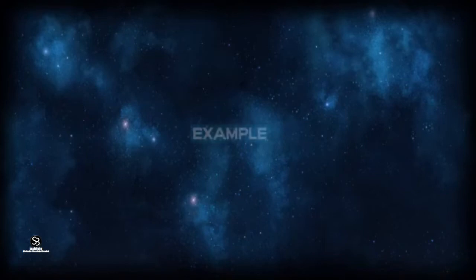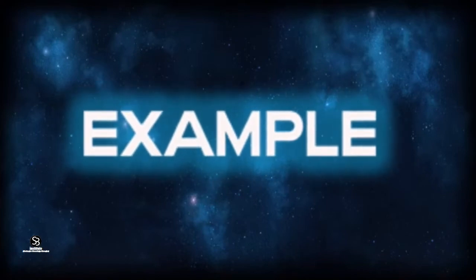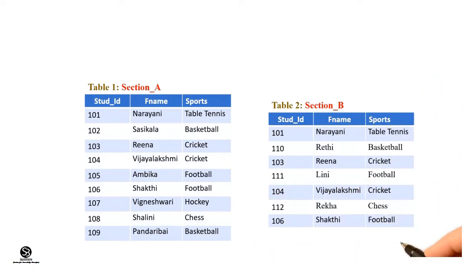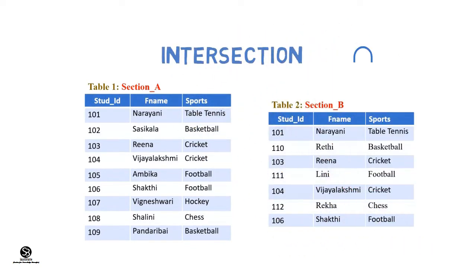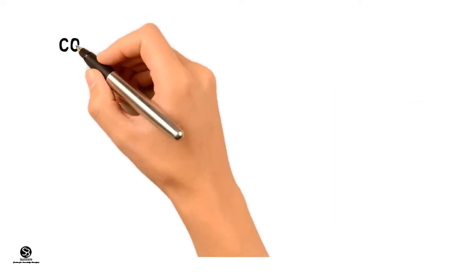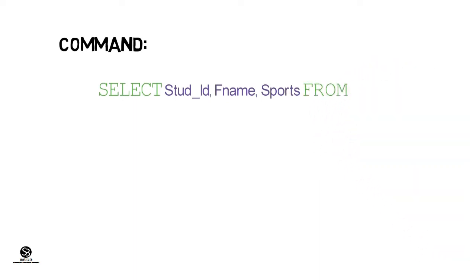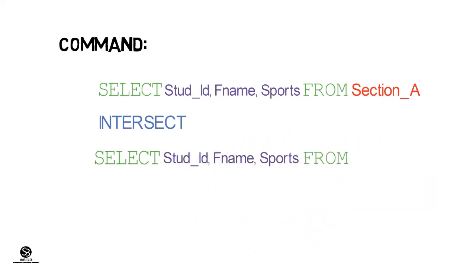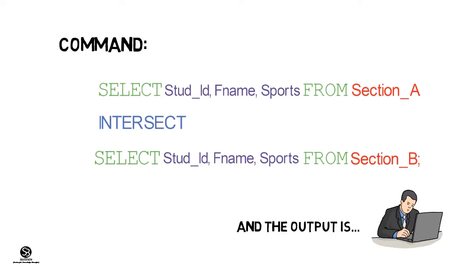There are two sections in 12th standard: Science and Commerce, with respective tables Section A and Section B. Both are type compatible. The sports teacher would like to find students from the science group (Section A) who are playing sports that are also played by commerce students (Section B). This can be implemented using SQL: SELECT StudentID, FName, Sports FROM SectionA INTERSECT SELECT StudentID, FName, Sports FROM SectionB. The output will have all records present in both Section A and Section B.